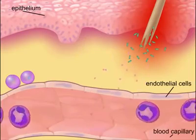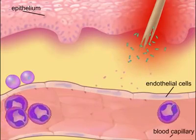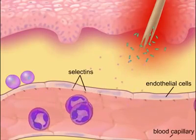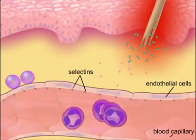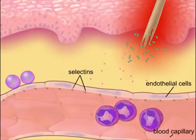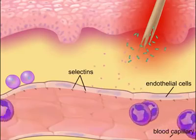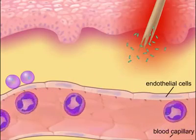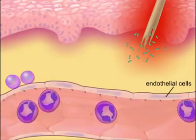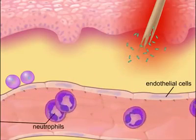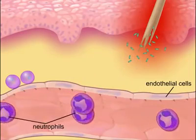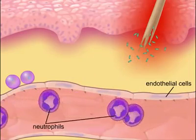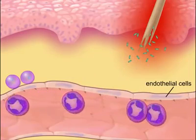Within the capillaries, adhesion molecules called selectins are displayed on the activated endothelial cells. These adhesion molecules attract neutrophils, slow them down, and cause the neutrophils to roll along the endothelium.